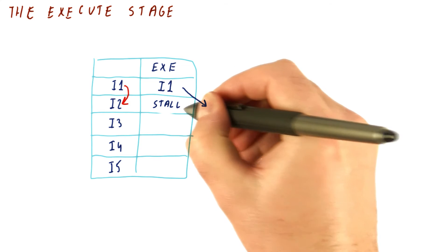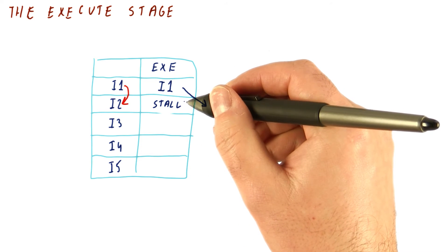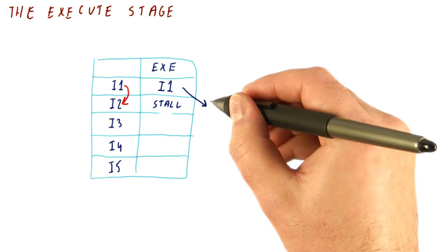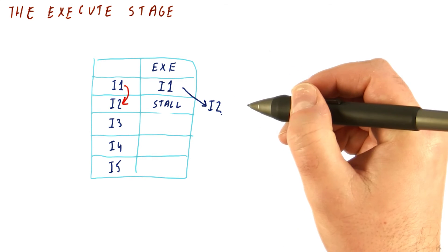We will have to stall, meaning this instruction has to be delayed. It just cannot execute in this cycle. It will execute in the next cycle.